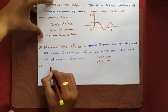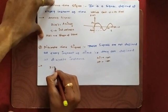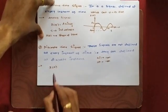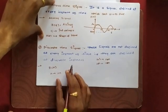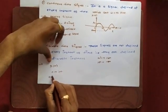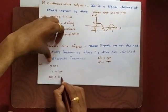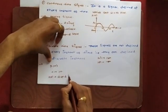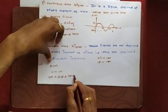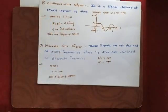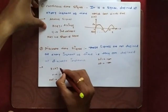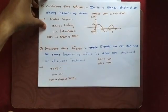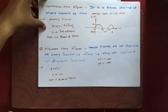Now, how can we represent discrete time signals? They are represented as x(n), where n is an integer on the x-axis, and x(n) indicates the shape of the signal or the sequence of the given terms. They can be represented in different ways — one can represent discrete time signals with the help of a sequence, in the form of a function, or as a graphical representation.